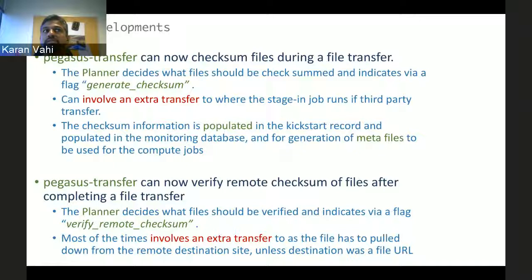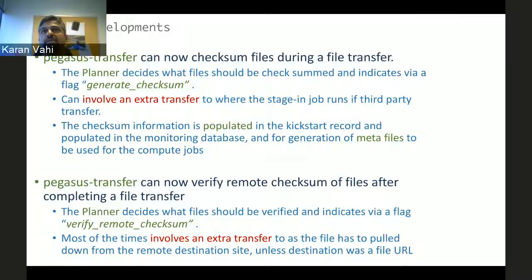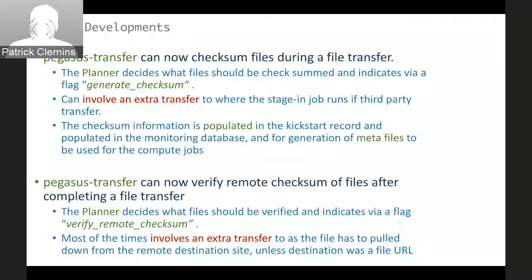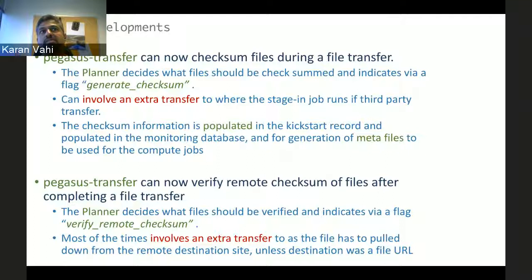Some other recent developments to close the loop: for the case where a user doesn't have a way of computing checksums beforehand for raw inputs, our transfer tool called Pegasus-Transfer can also checksum files during file transfers. Based on whether a checksum is available for raw inputs, the Pegasus planner decides which files should be checksummed. In some cases there can be an extra transfer involved, where Pegasus-Transfer has to pull data down first to the node where the transfer job is running, compute the checksum, and then use that checksum for subsequent jobs.